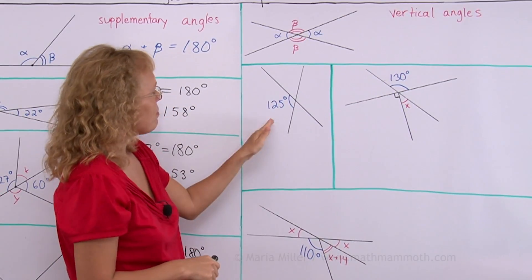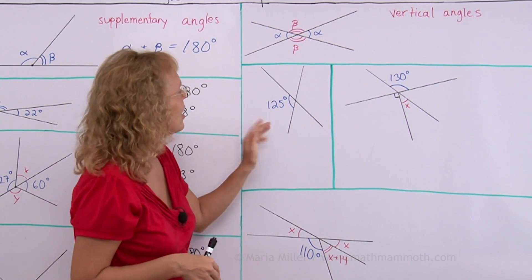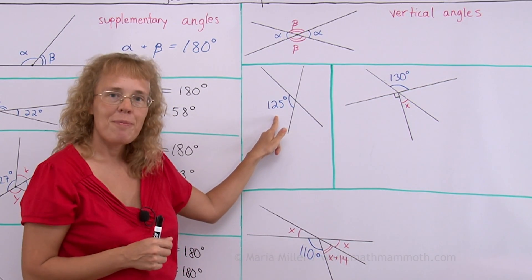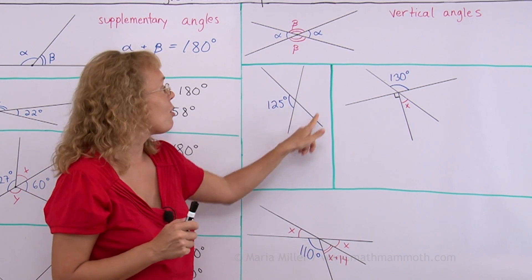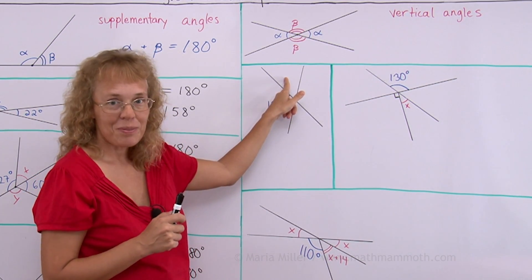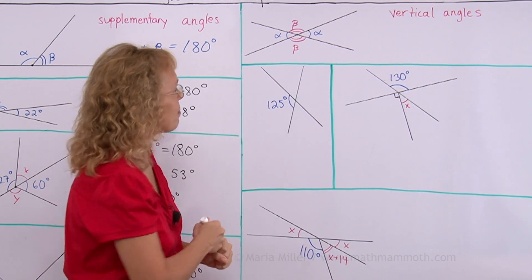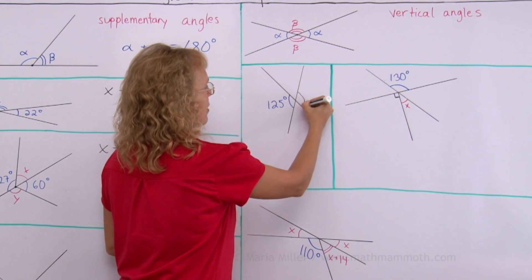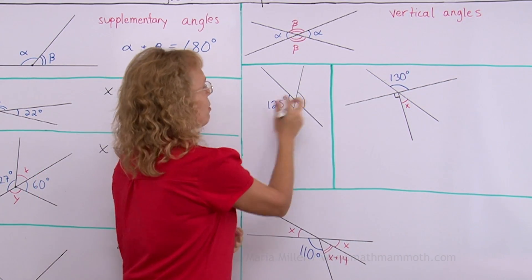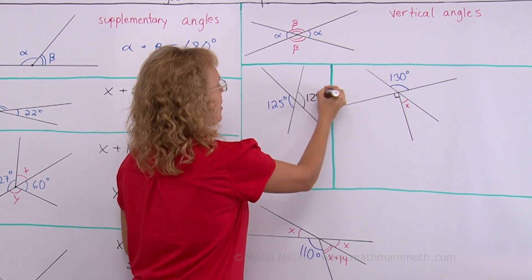And now here I have a little puzzle about vertical angles. If one angle measure is given we can find all three here. Can you?